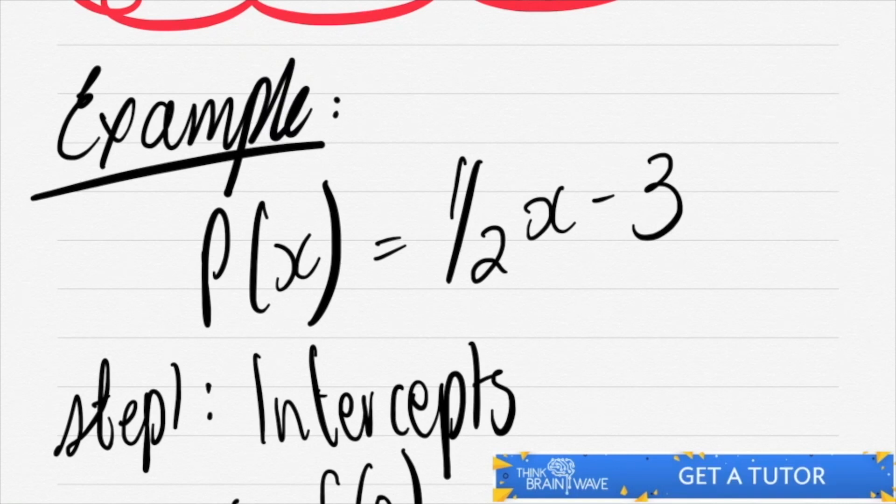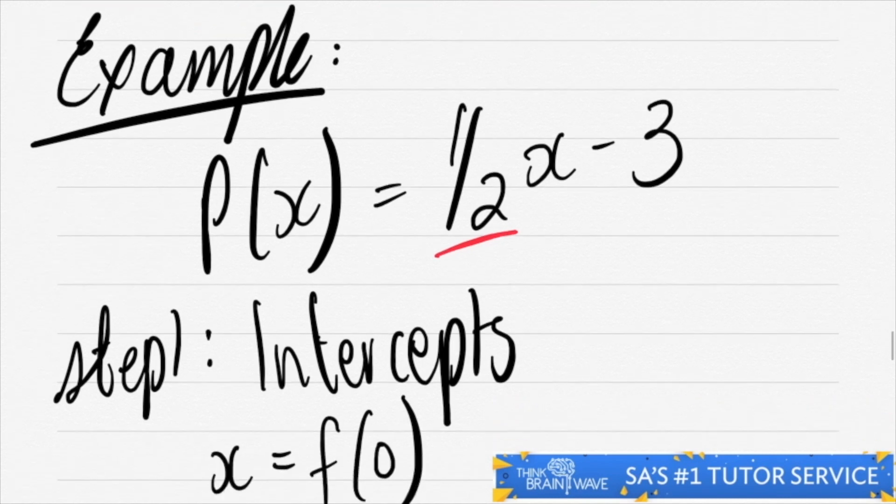Let's do an example. So you've got 1/2 x minus 3. Your gradient is already told, it's a half. Let's do your intercepts.